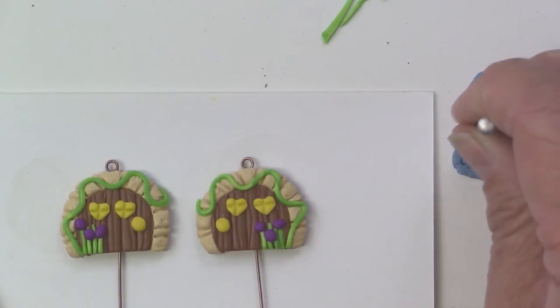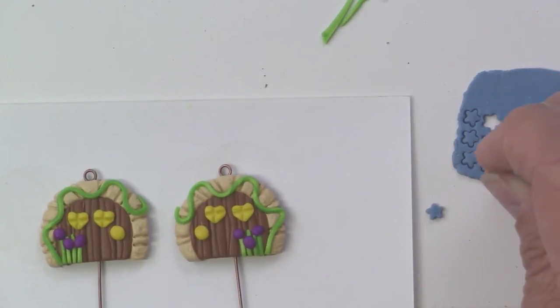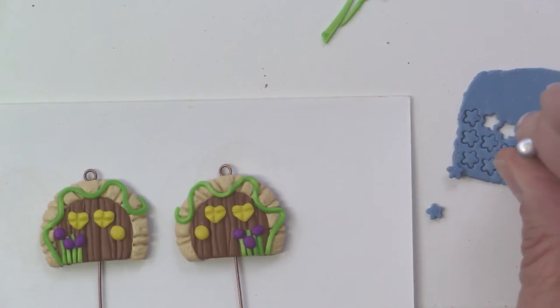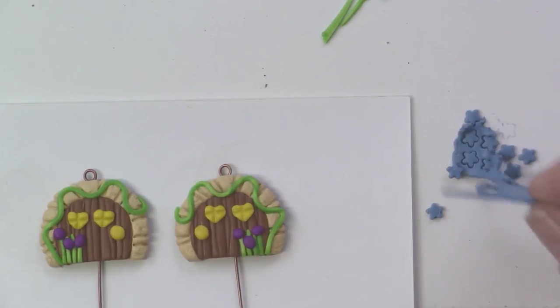Those look really cute. Now I've got this blue color and I'm cutting out little star shapes. If you don't have these cutters, don't worry about it. Just cut out some little circles or make a little round ball and place them. You can simulate flowers easily enough. I happen to have these cutters and I just love them.